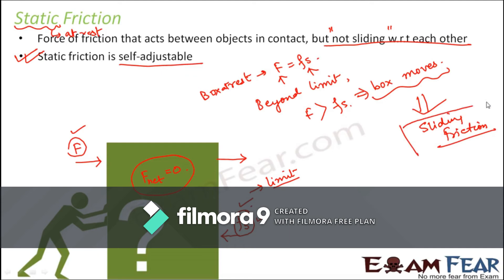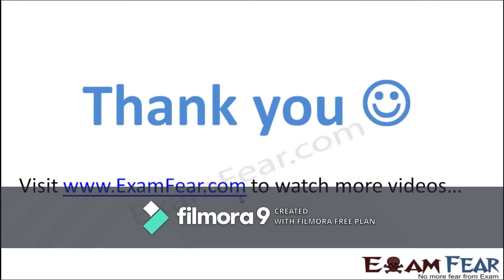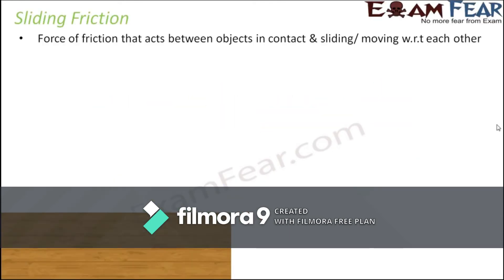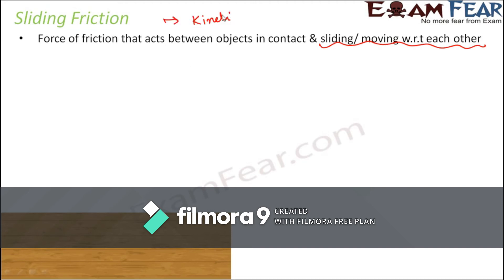Once the box starts moving, the concept of static friction no longer applies. The friction that then acts is called sliding friction, also known as kinetic friction — friction that acts between objects in contact and sliding or moving with respect to each other. The word 'kinetic' is used for anything in motion.